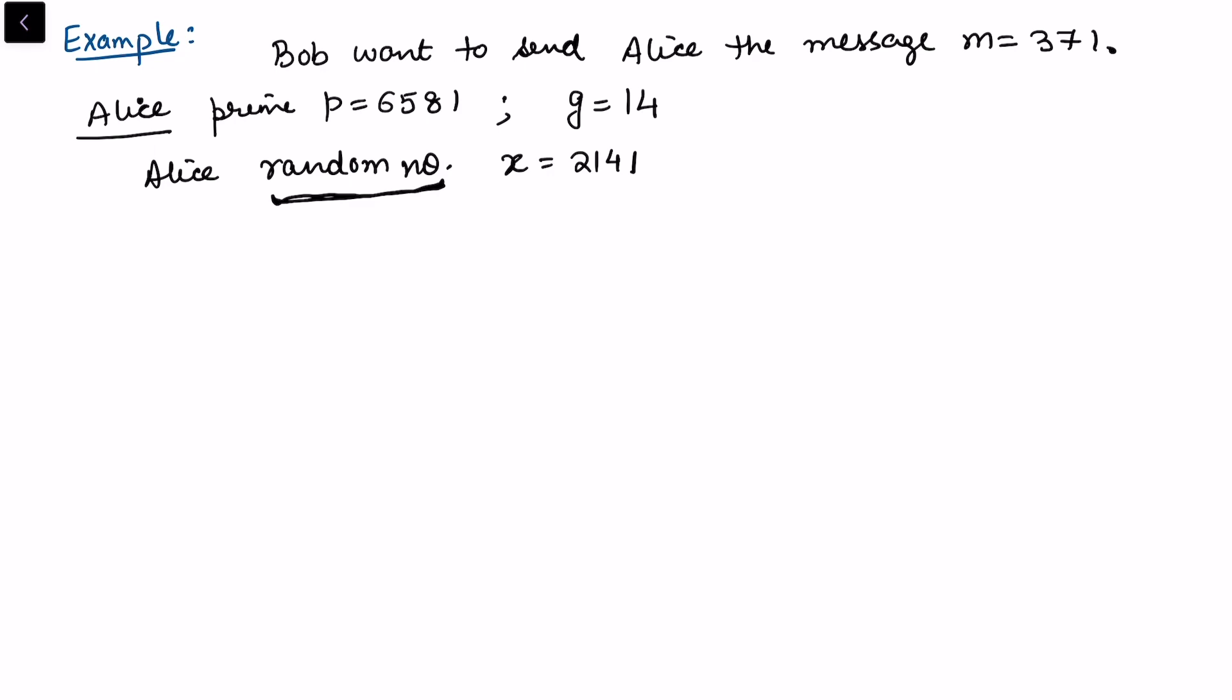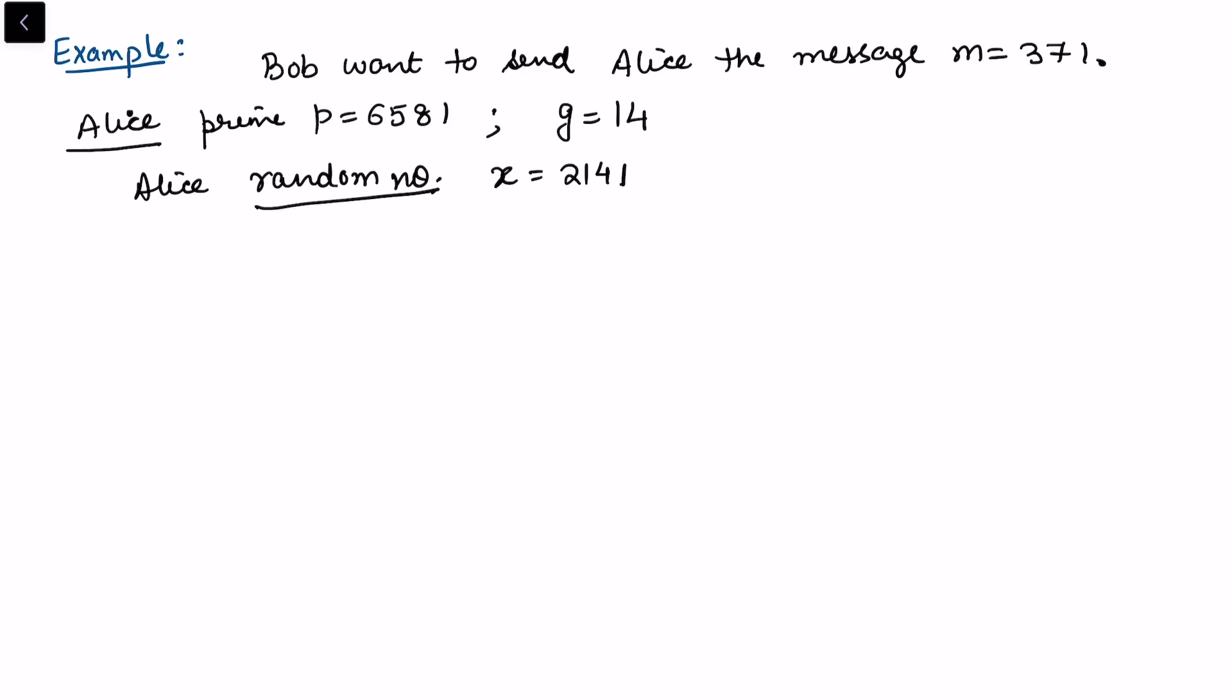And the moment I say random number, you can see why random numbers also play a very important role in cryptography. So somebody definitely wants to generate random odd numbers or even numbers depending upon the requirement. And here this random number is generated using the same thing as I've just simply mentioned, that the random number should lie between 2 and p minus 2.